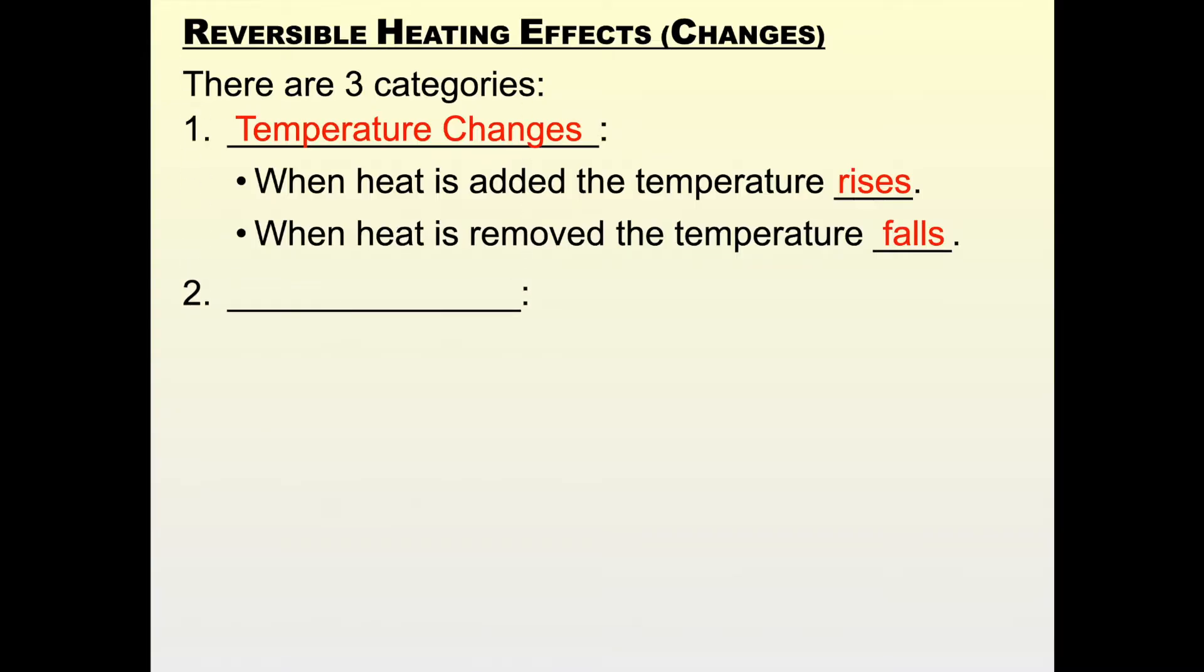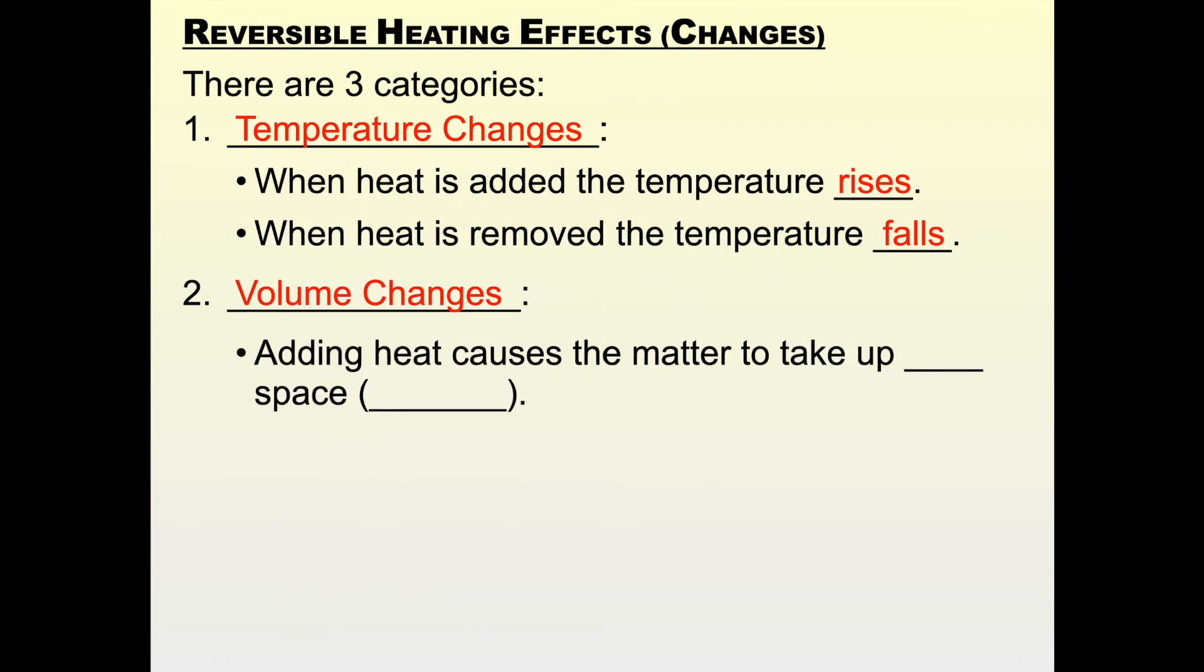The second type is called volume changes. So what's volume again? That's right, volume is the amount of space that something takes up. When you heat things up we're going to see that it'll change the volume. It'll change the amount of space that something takes up. Adding heat causes matter to take up more space. As a scientist we would say that when it takes up more space when you heat it up, the volume gets bigger or expands is the word we would use. So why do you think that happens?